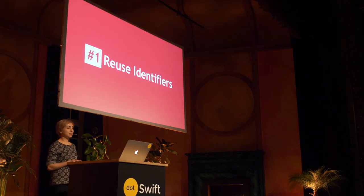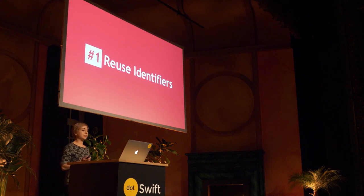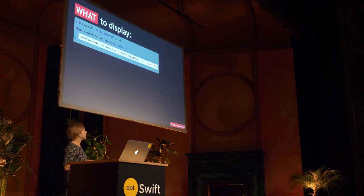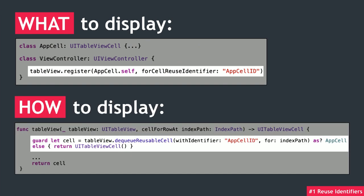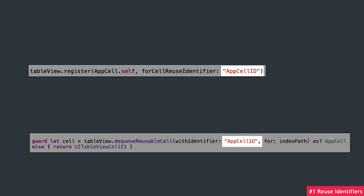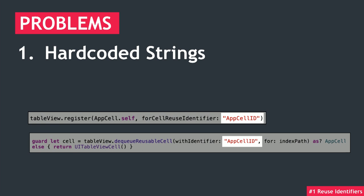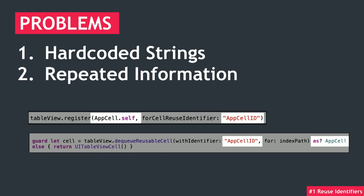First up, we have reuse identifiers. The reuse identifier is a unique string associated with a UITableViewCell class. It lets your table view know what kind of cells it should be able to display when you register them, and how to display them when you dequeue them. When I look at this traditional approach, I find it slightly horrifying for two reasons. The first and most obvious one is that this app cell ID string is a string literal, just hard-coded willy-nilly.